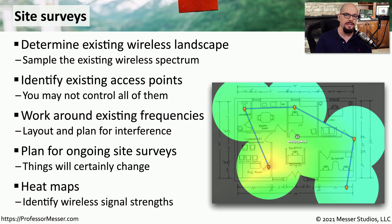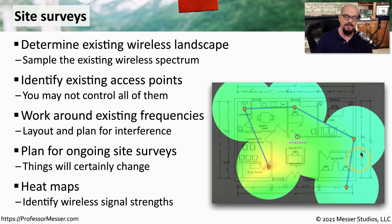One way to visually see the results of these site surveys is to use a heat map. There are a number of tools that can help you build these heat maps. You move around your building and the system creates a visual map of where your wireless networks are and where the largest signal strengths happen to be.